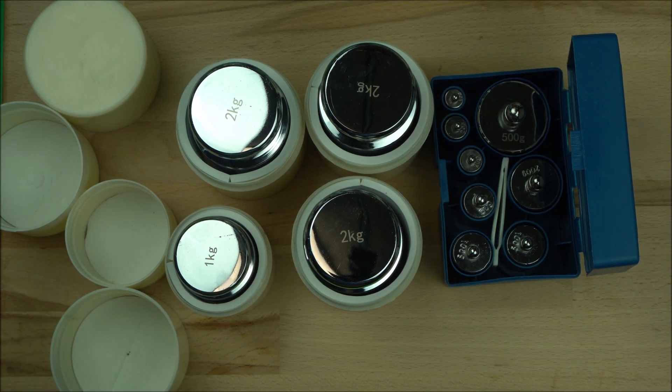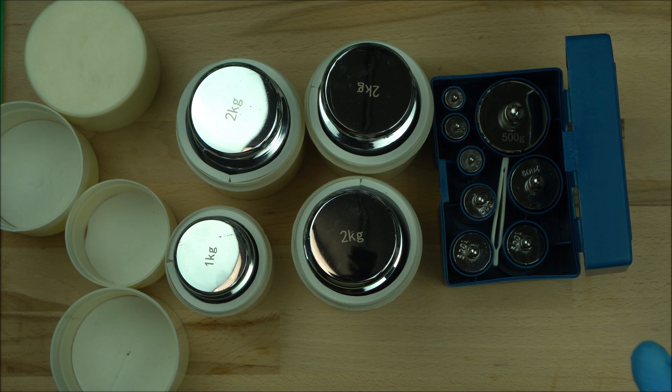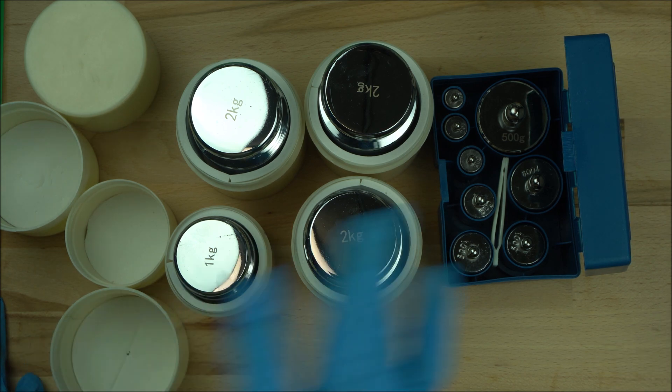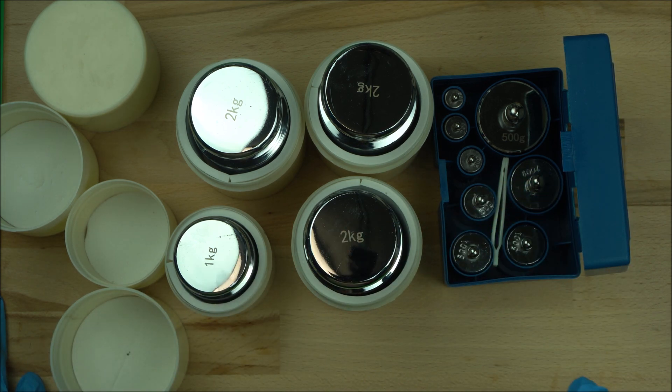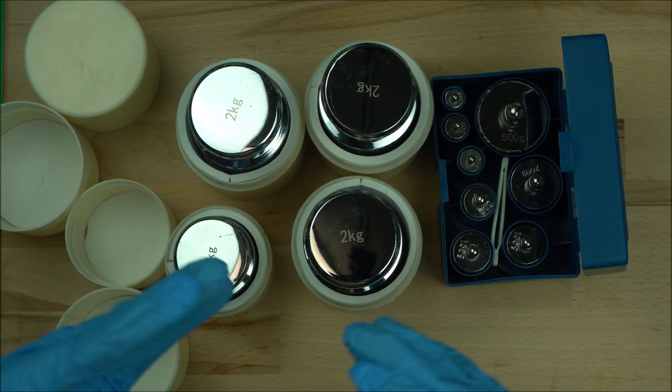So if you want to save money on calibration weights, this is a video for you. How do I get calibration weights to use for my scale? Do not go for a brand, okay? Make sure you go for generic ones. I have a link in the description box below for where you can get any of this.